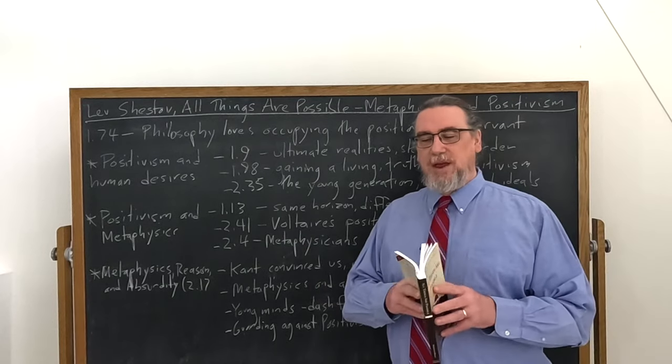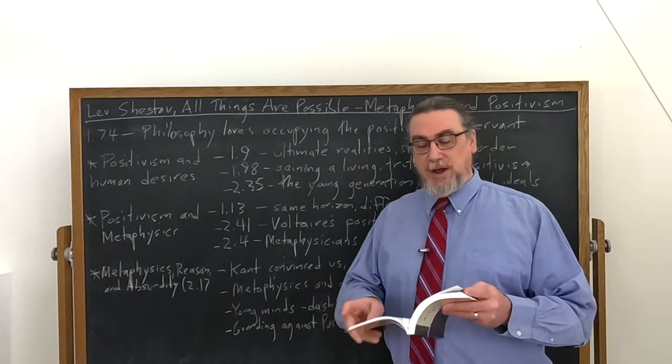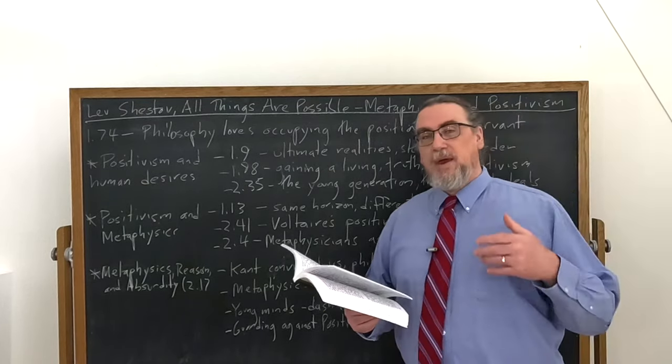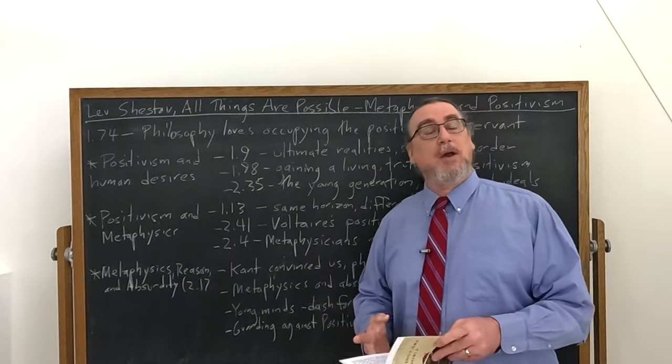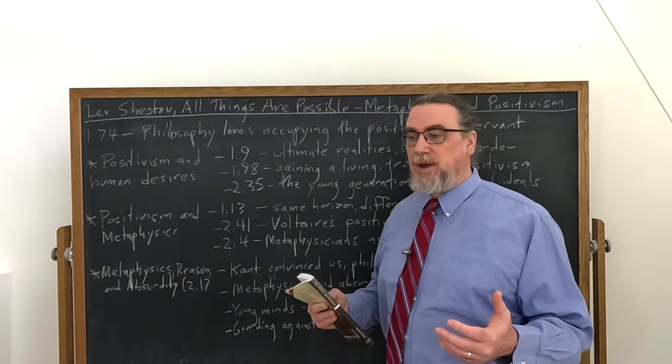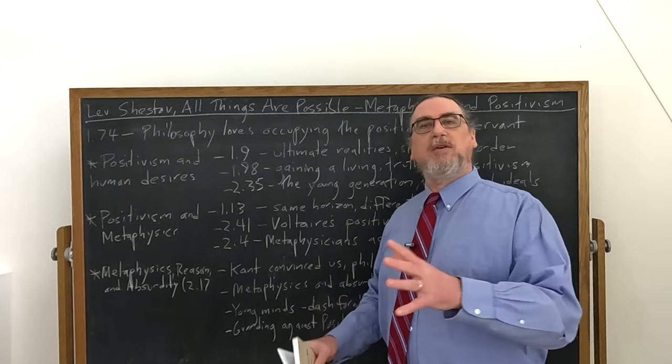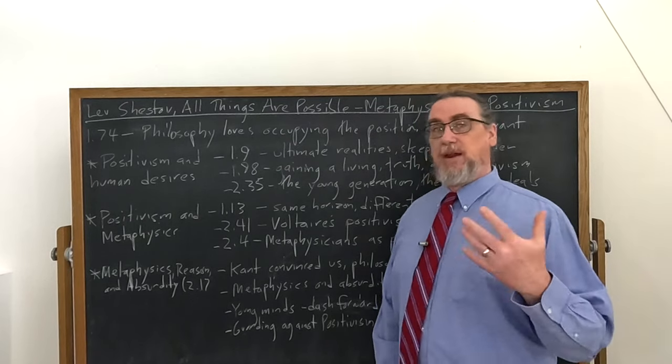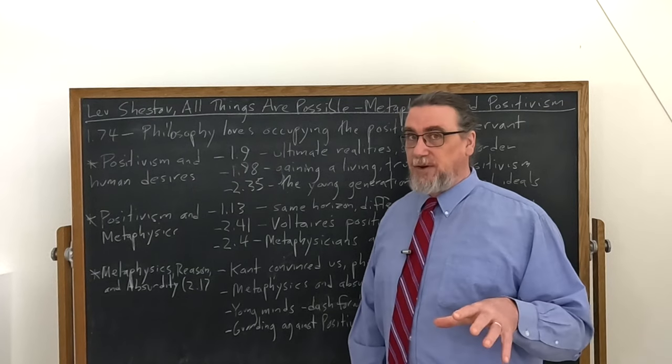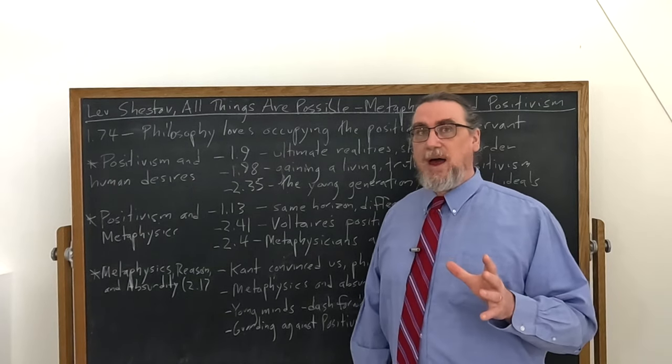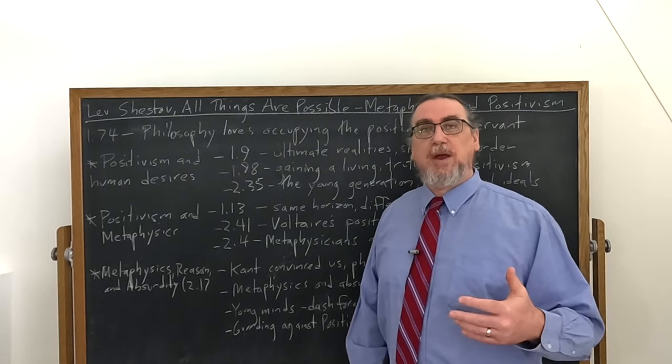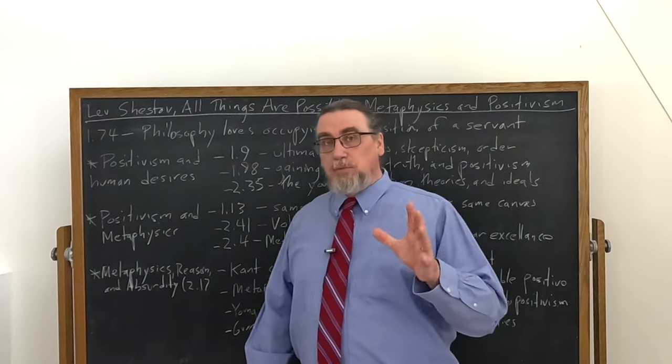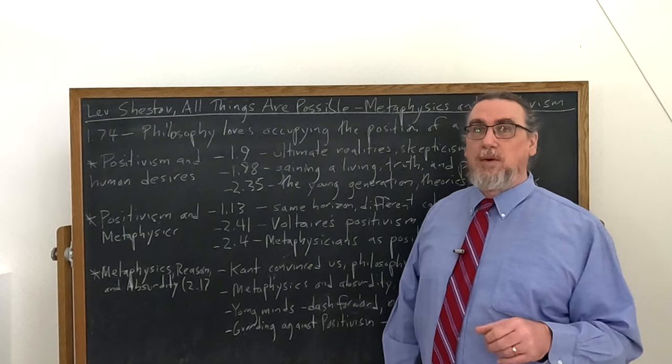Then we get this really interesting, long discussion in chapter 17 of part two, which begins by talking about Kant. Now, in our time, Kant is probably less important. Maybe he's important for moral theory, but there's not an awful lot of Kantians out there in epistemology and metaphysics.